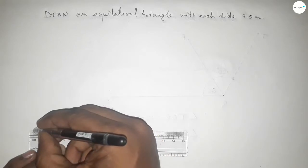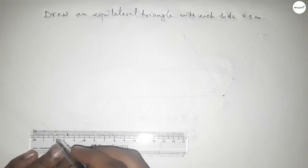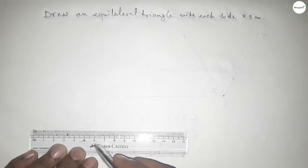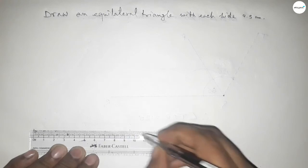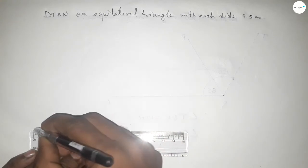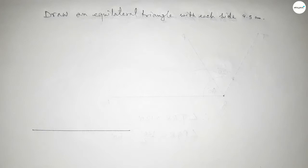So this is starting 0 and this is 1, 2, 3, 4, 5, 6, 7, 8, 9 and this is 9.5 centimeter. So first draw a line of length 9.5 centimeter and taking this as A and B.